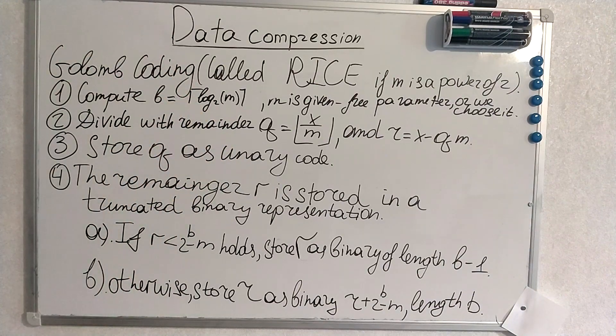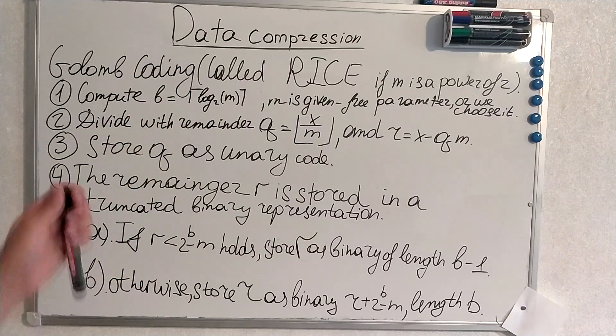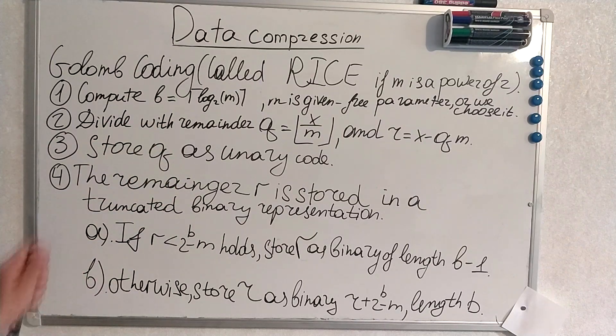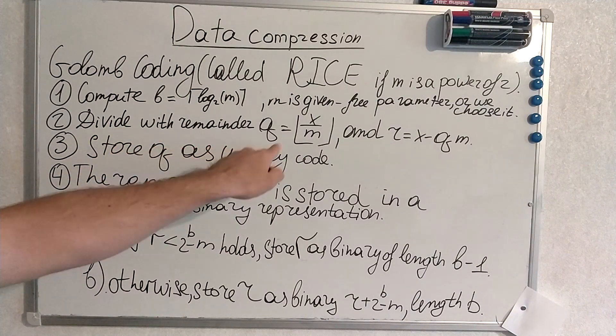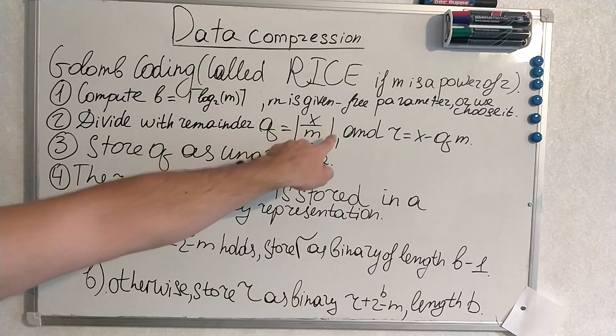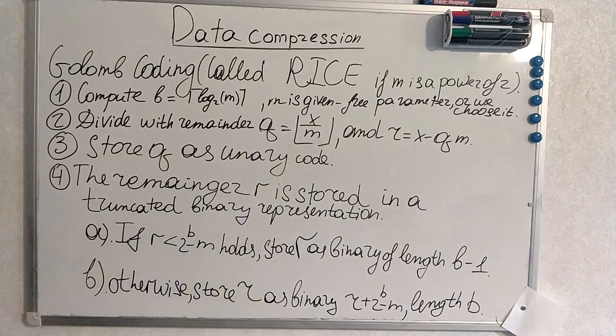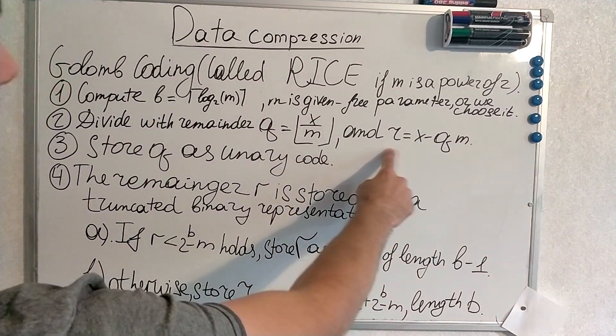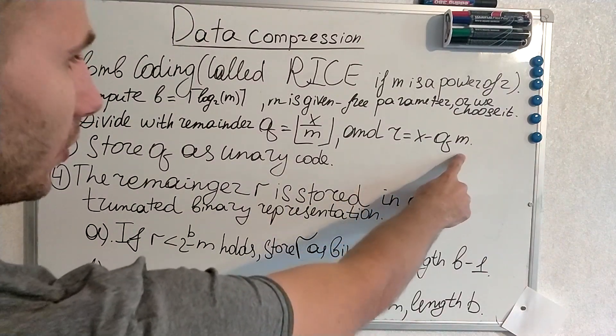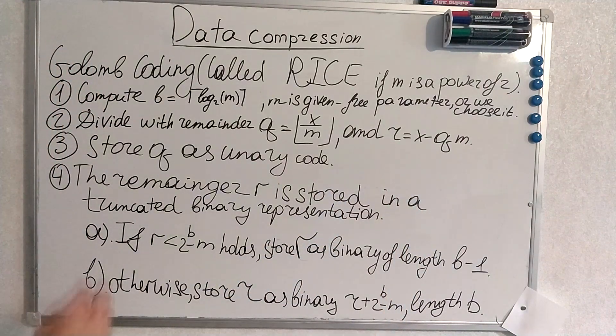This is some b which we use later in calculations. Then we divide with reminder and form new variable q. q is our number divided by m and it's forward to the smaller integer. And we calculate the reminder. Now we know q and we know also x is our number. We calculate r.